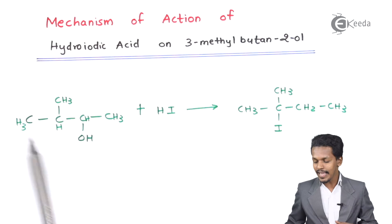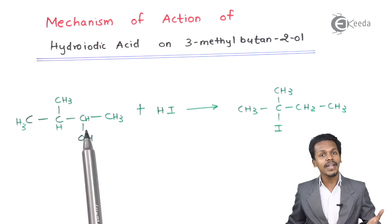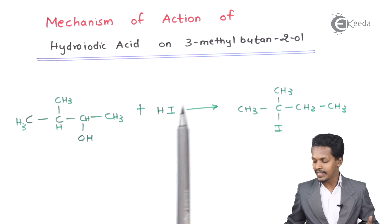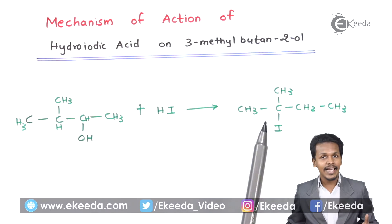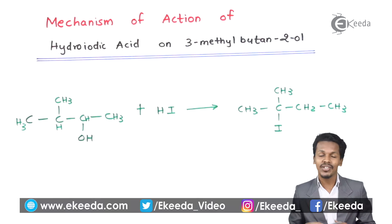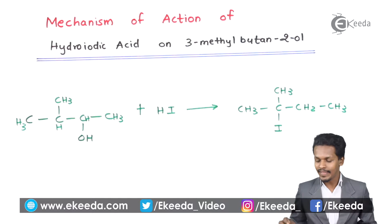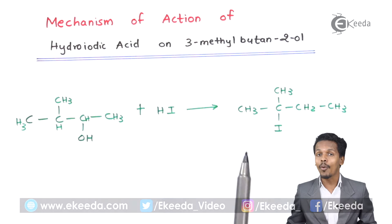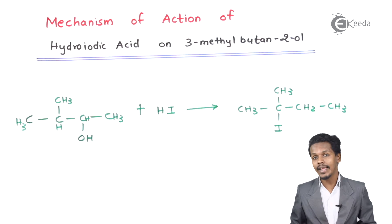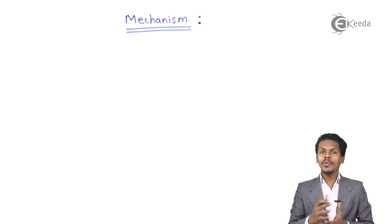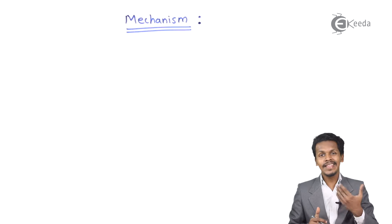In this case, this alcohol, which is a secondary alcohol, will react with hydroiodic acid such that the product obtained will be a tertiary alkyl halide. So how the reaction proceeds from a secondary alcohol to give a tertiary alkyl halide — this is the main thing we are going to discuss in this mechanism.